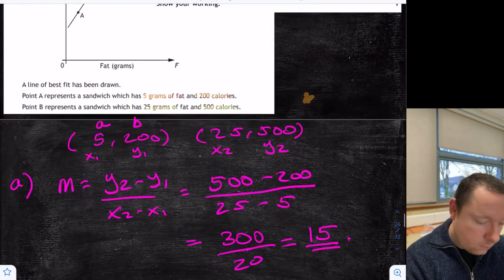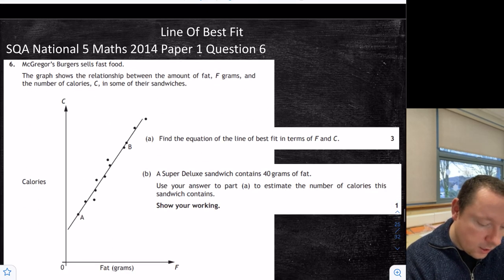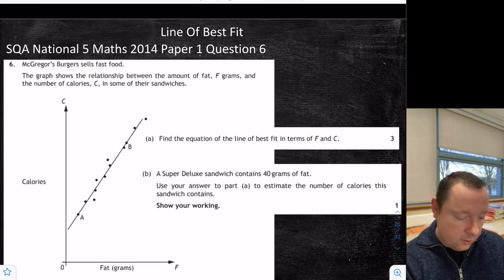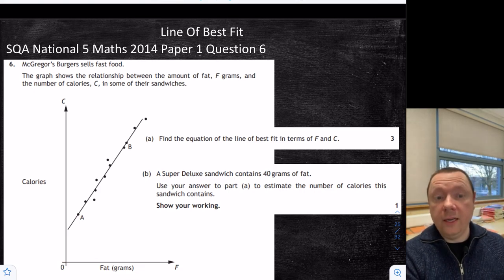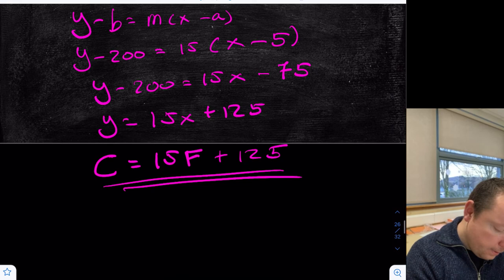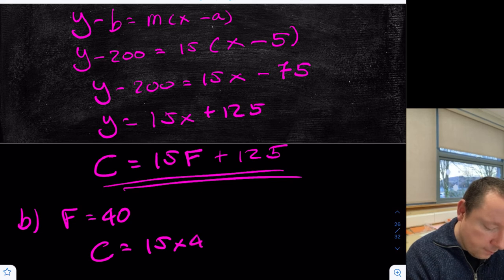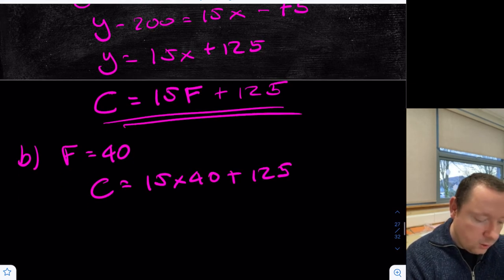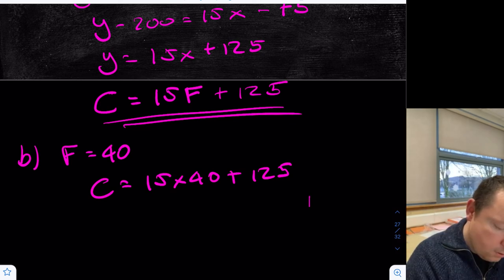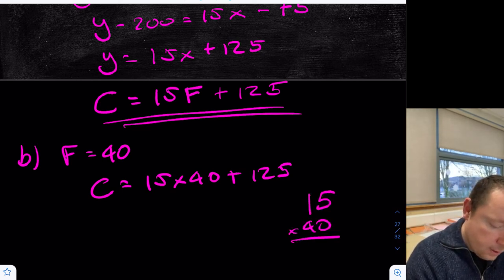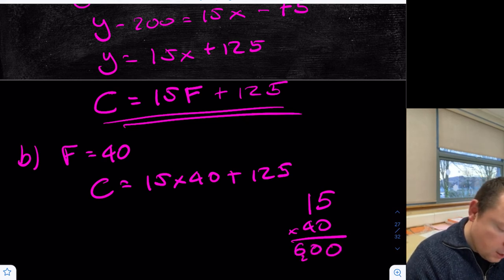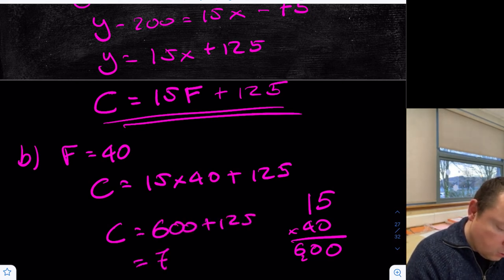Part B says a super deluxe sandwich contains 40 grams of fat — use your answer to Part A to calculate calories. We're just substituting 40 in for F. So: F equals 40, meaning C equals 15 times 40 plus 125. Working out 15 times 40: that's 600. So C equals 600 plus 125, which is 725 calories.